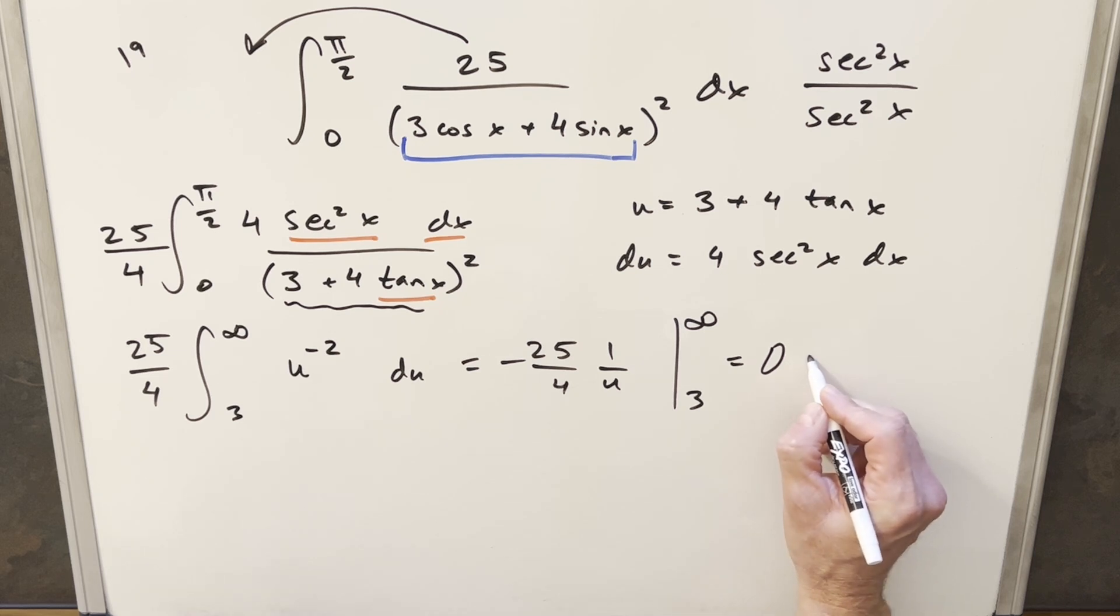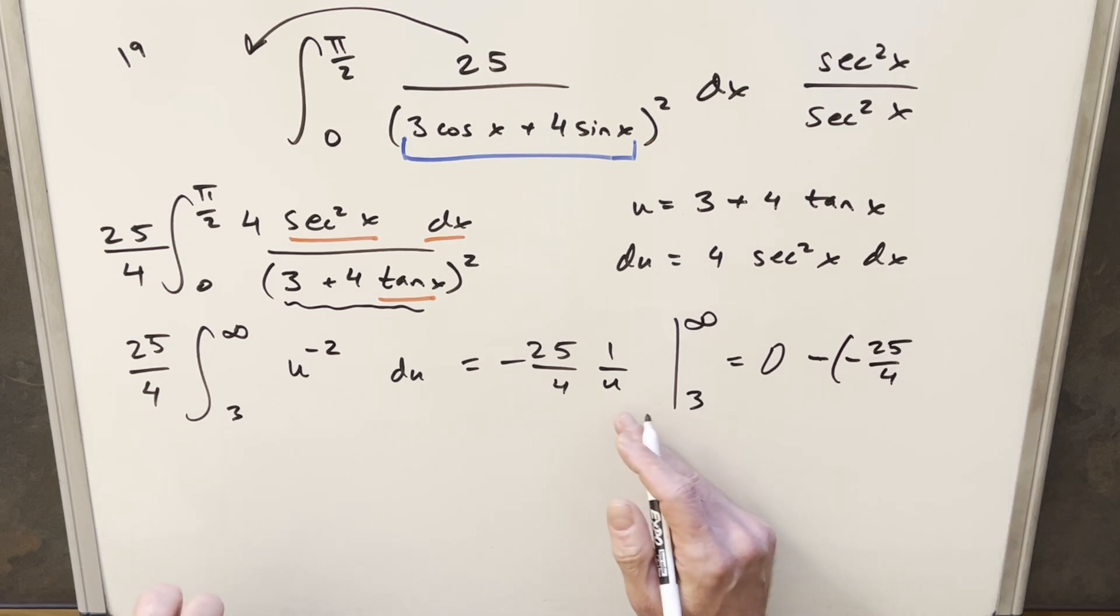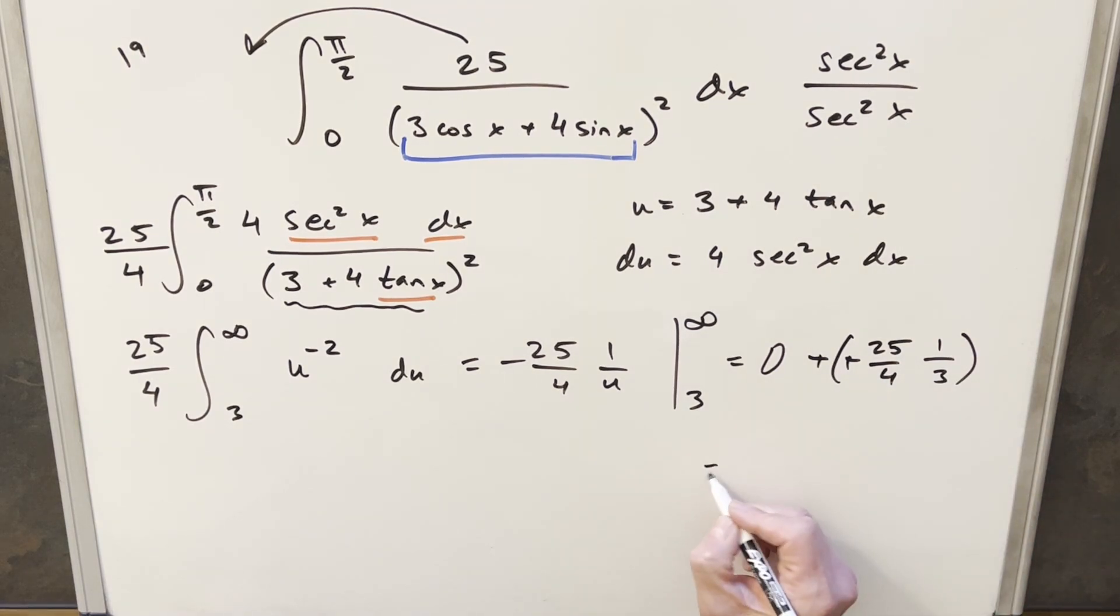Now, for the second term, we have minus. Then let's just write this all out clearly. We'll have minus 25 over 4. And this 1 over u is going to become 1 over 3. But minus times minus is plus. Multiplying this together for my final solution, I just get 25 over 12.